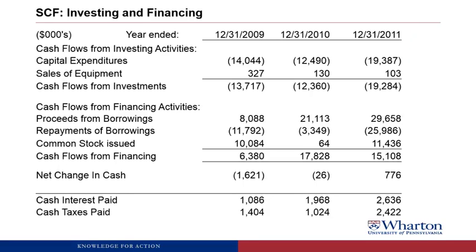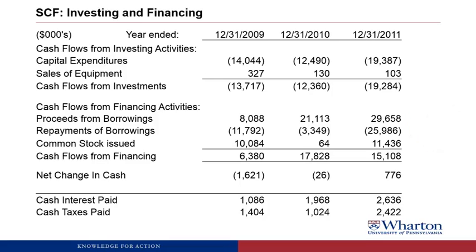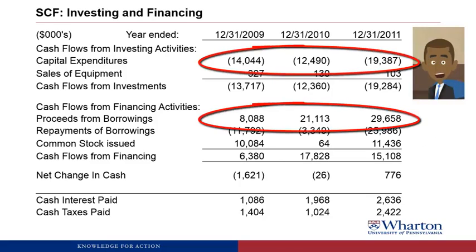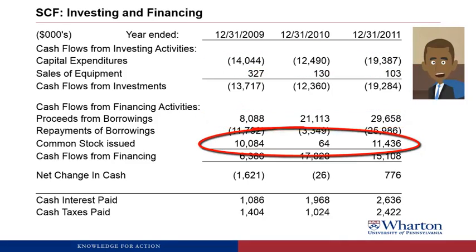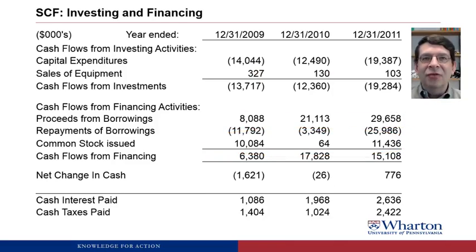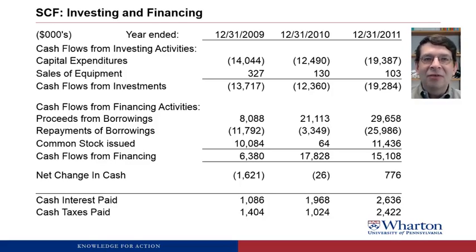The rest of the statement of cash flows is the investing and financing sections, and at the bottom are supplemental disclosures for cash interest paid and cash taxes paid. Although lumpy, the capital expenditures, proceeds from borrowing, and common stock issued mirror the growth in PP&E, debt, and added equity on the balance sheet. From here we can see that the company is growing substantially through its capital expenditures. There aren't any acquisitions — it's all internal capex — and they built two new factories. They're financing this growth with both debt and equity, using big debt issuances and a couple of big equity issuances.